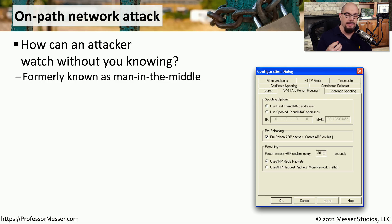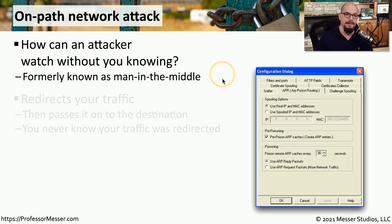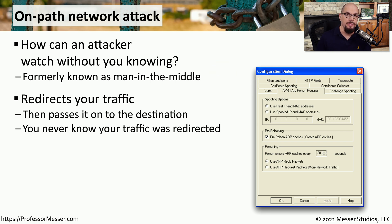An on-path attack is an attacker that sits in the middle between two stations and is able to intercept and, in some cases, change that information being sent across the network. This type of attack could occur without anyone knowing, and you may hear it referred to as a man-in-the-middle attack. The original data stream is intercepted by the person in the middle and then passed on to the destination, allowing the attacker to read and possibly modify everything going back and forth between two devices.